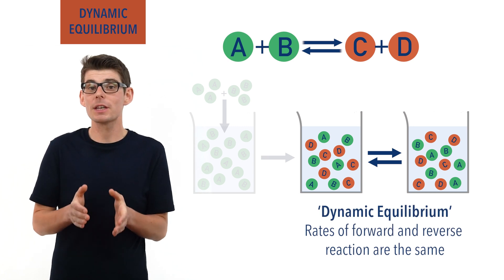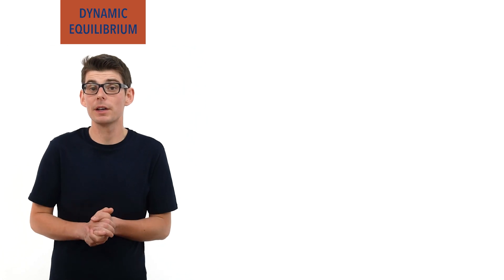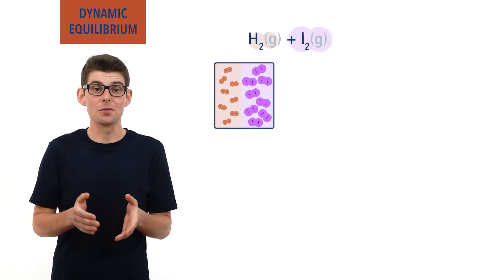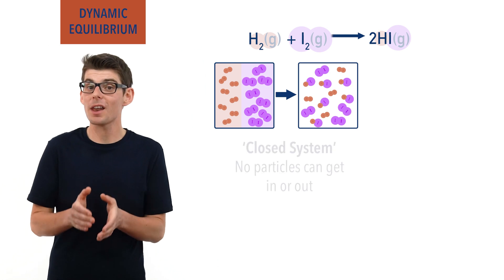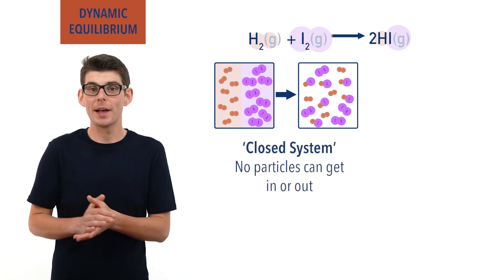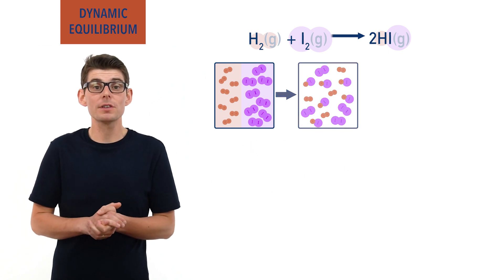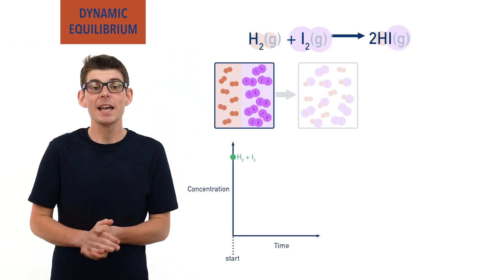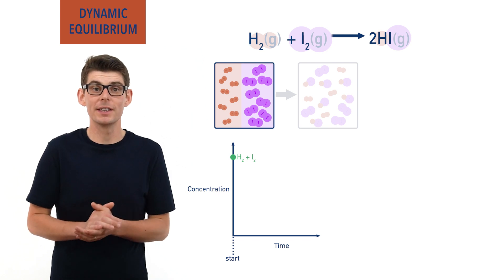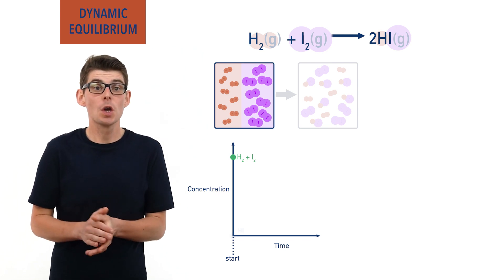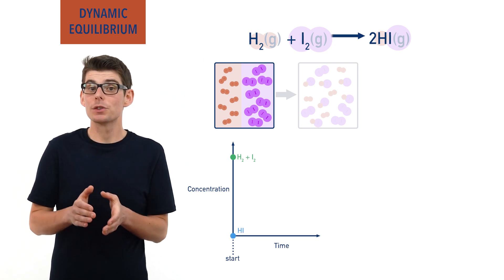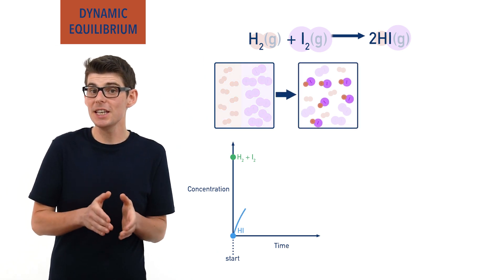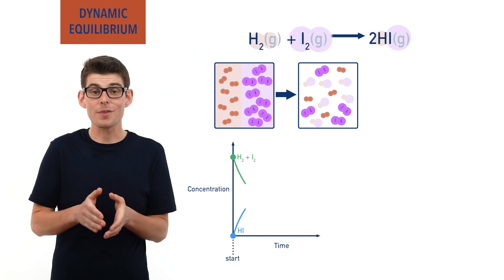Let's think about hydrogen and iodine again. If we mixed some hydrogen and iodine gas together in a sealed container, they would start to react and form hydrogen iodide. The sealed container makes the system closed — no particles can get in or out. At the start, there will be lots of hydrogen and iodine molecules, meaning a high concentration of both. They will collide together frequently and the rate of the forward reaction will be high. As a result, the product hydrogen iodide will be produced very quickly and its concentration will start to increase. The concentrations of hydrogen and iodine will start to decrease, and this will slow down the rate of the forward reaction.